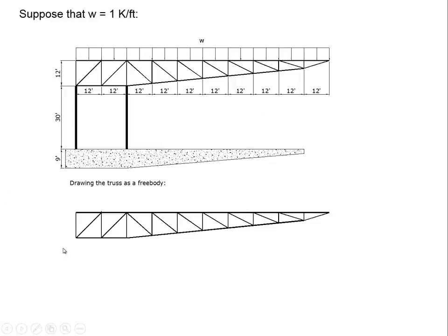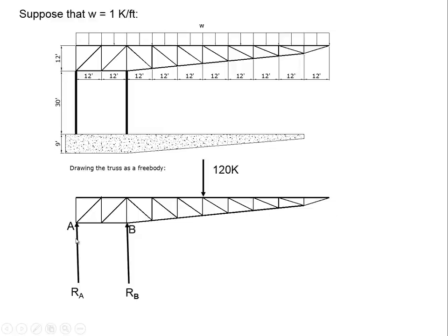So the first thing we want to do when we solve a problem like this is draw a free body of the object in question. In this case, we're looking at the equilibrium of the truss, and we're trying to understand what these vertical members are doing in terms of keeping the truss stable and in place. They are creating reactions of some sort that are occurring at this point and at that point.